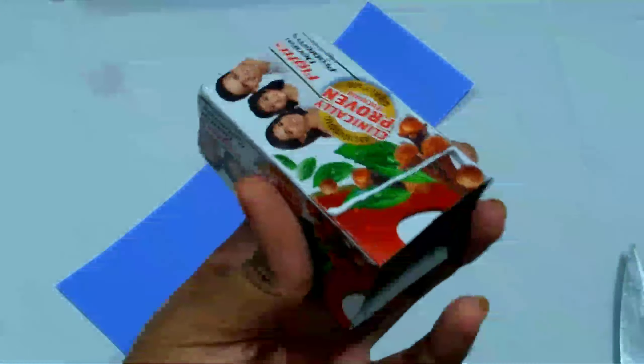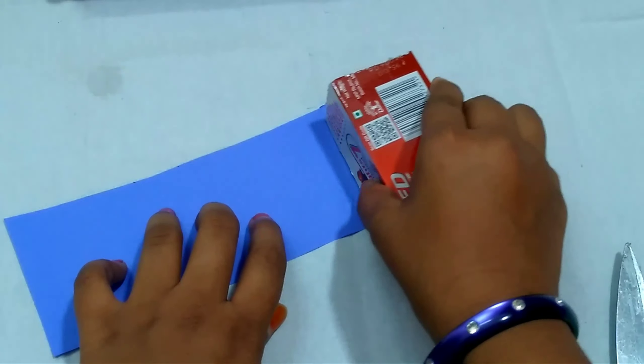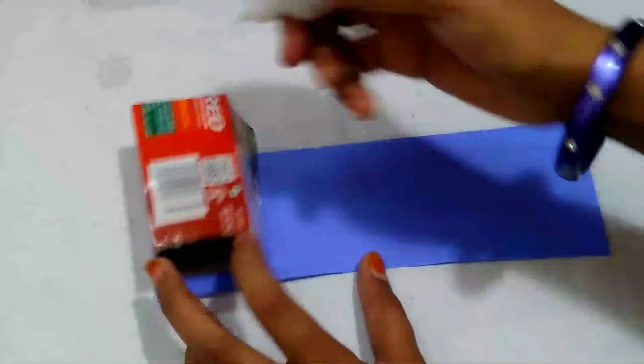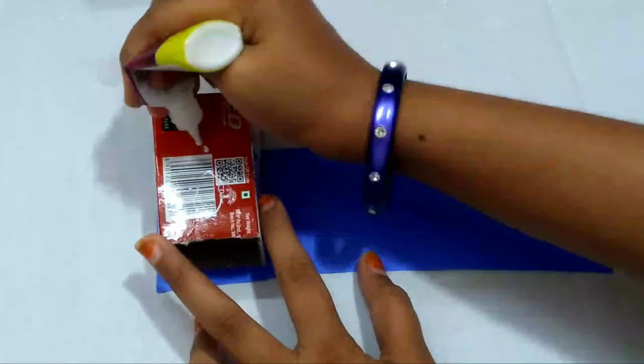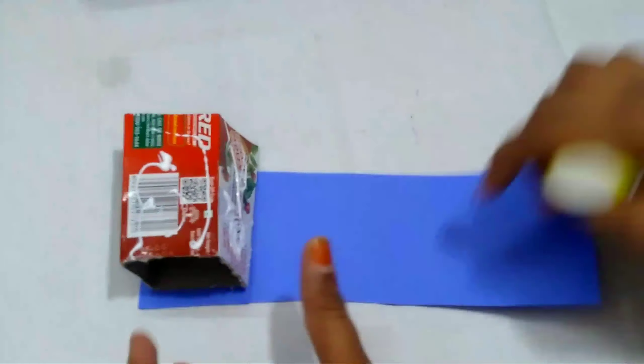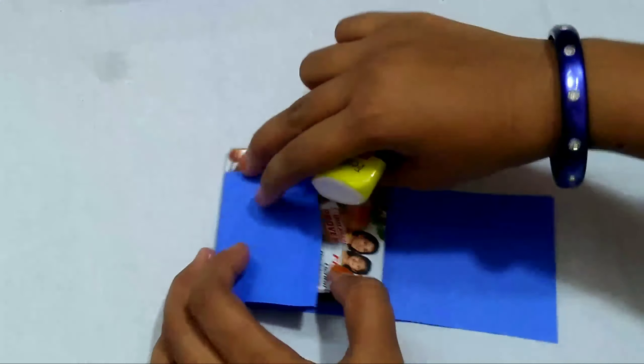Now apply glue to the box and attach the color paper. Now roll it.